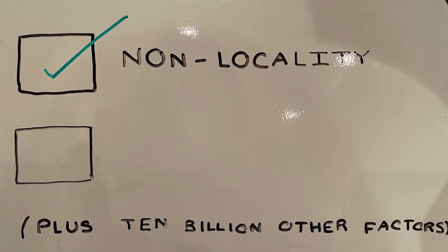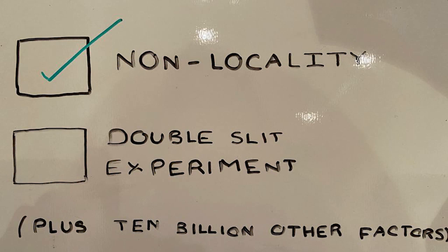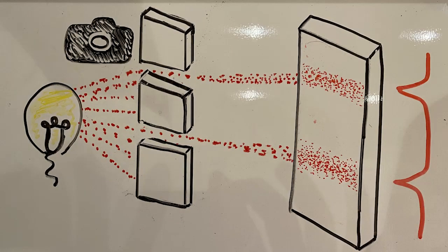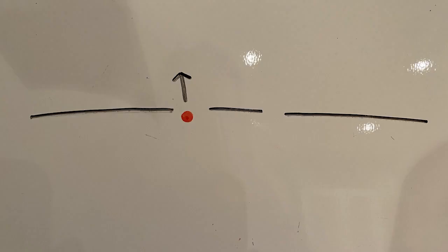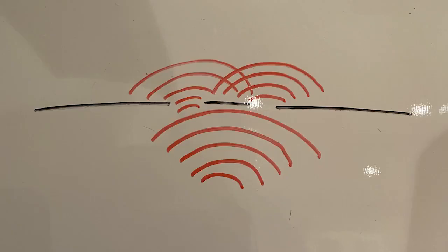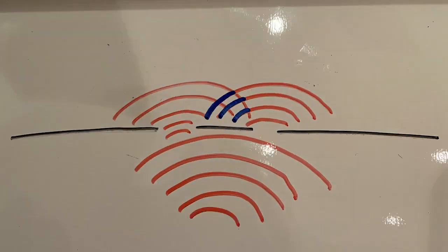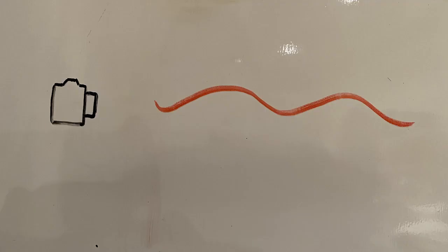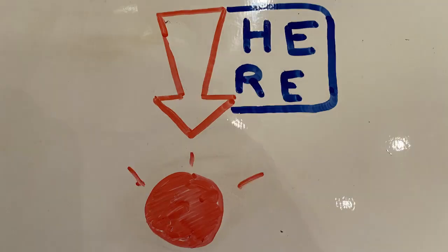Secondly, the theory must also explain the double slit experiment, where particles somehow behave either like particles or waves, depending on whether they are being observed. Using pilot wave theory, the particles pass through one slit, whereas the pilot wave passes through both. Interference in the pilot waves leads to the observed interference pattern, and an observational tool placed at the slit will collapse the pilot wave and reveal where the electron was all along.